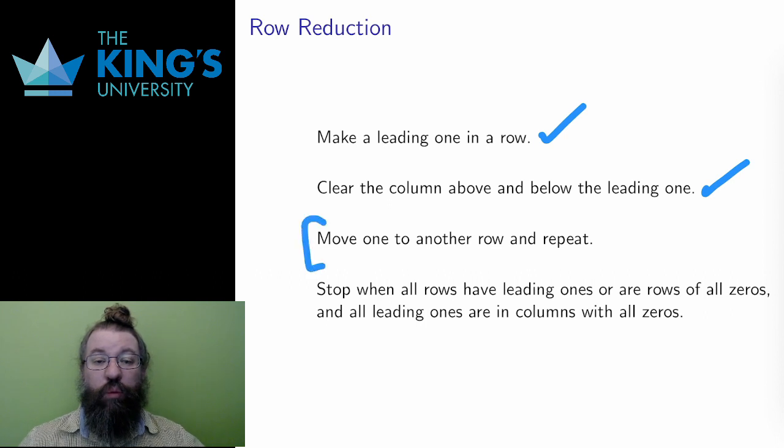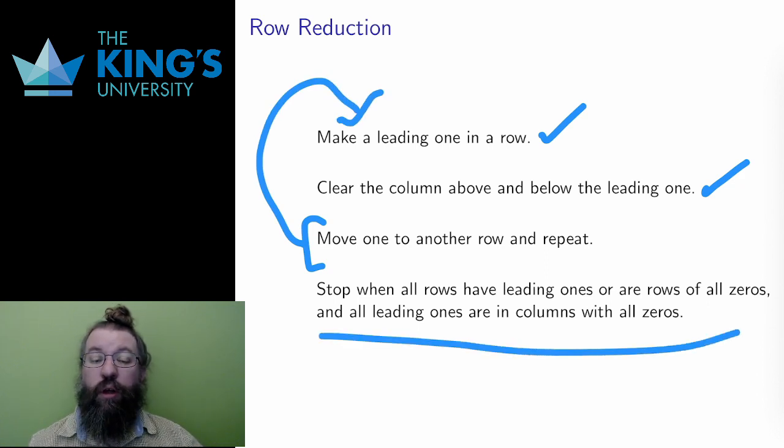Having made a leading 1 with a clear column above and below it, I move on to another row and repeat the process, and I stop when all rows have leading 1s or are rows of 0s. In the next video, I'll do examples. So even though I hope you get the general idea, the examples will make the algorithm much clearer.